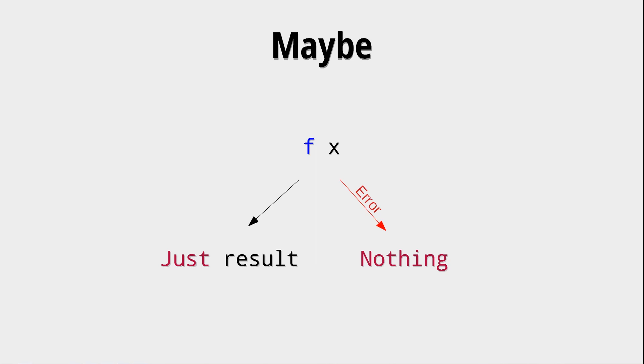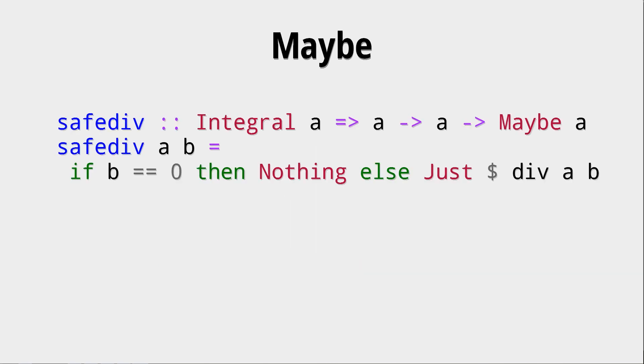Not in the case that nothing is returned, but the Nothing construct of the Maybe type. So, let's look at an example.